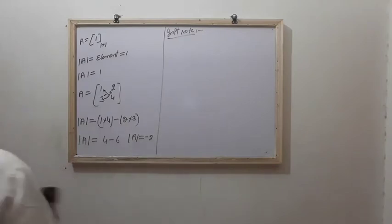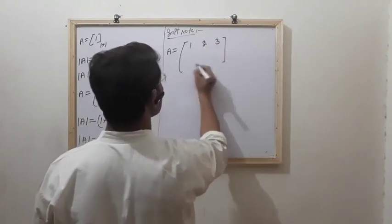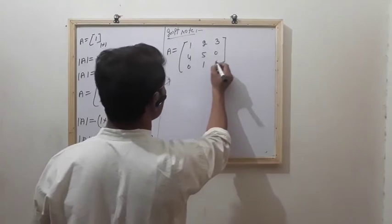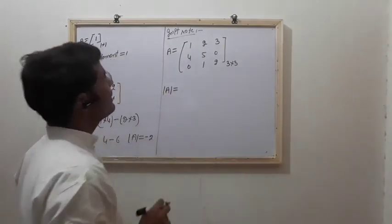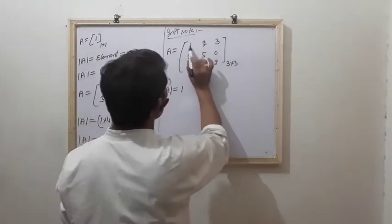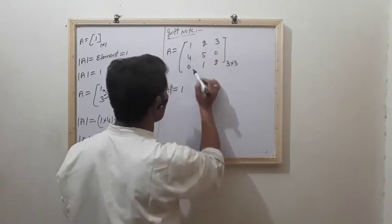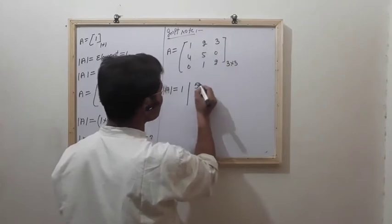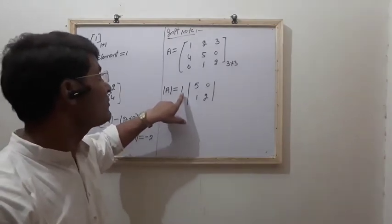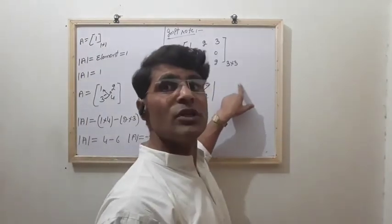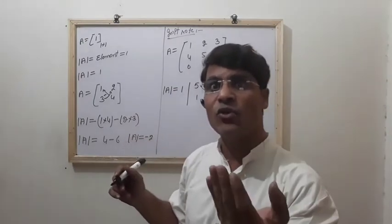Suppose A is the 3×3 matrix with entries 1, 2, 3, 4, 5, 0, 0, 1, 2. I am calculating the determinant of A. I take the first element 1 and delete its row and column; the remaining part is the 2×2 submatrix with entries 5, 0, 1, 2. The sign of each term alternates: first positive, second negative, third positive.